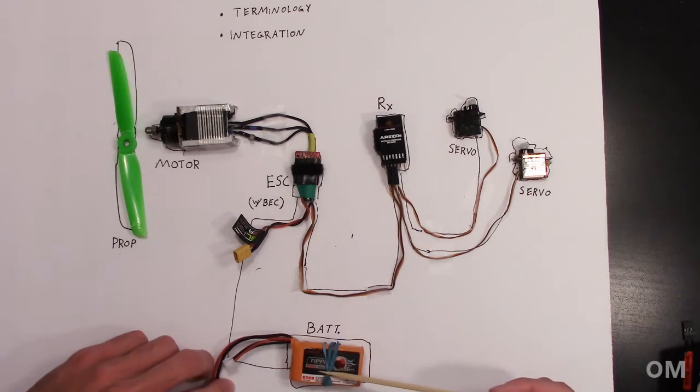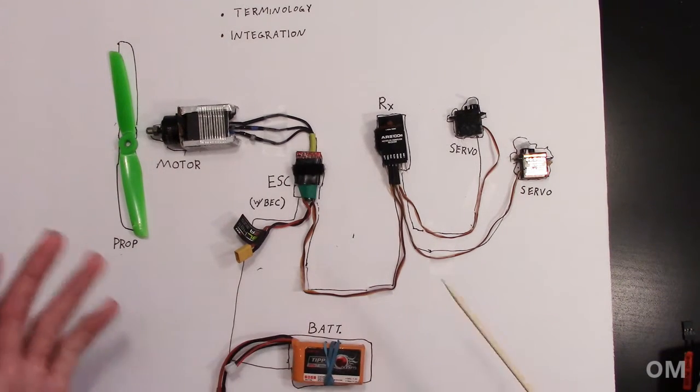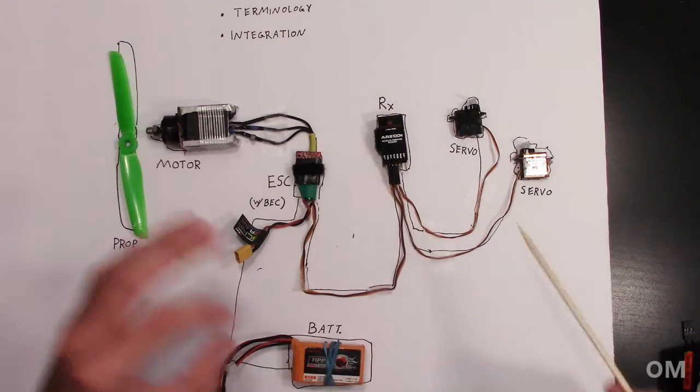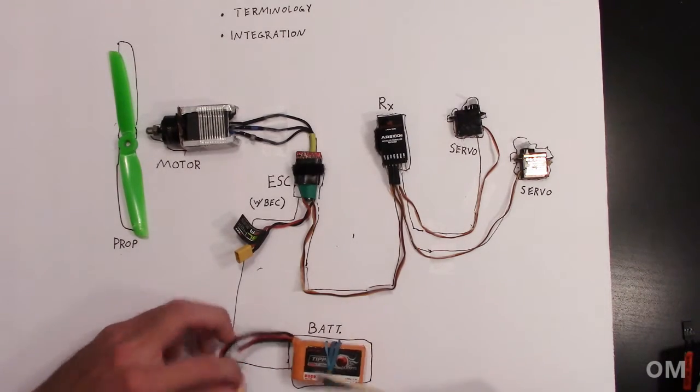So talking about each component, what they do, we have the battery. It obviously provides the electrical power. This happens to be a two cell. I'm not going to get into a ton of in-depth stuff because you could have a video on each individual thing. Maybe we will if there's demand. Okay, so we have the battery.